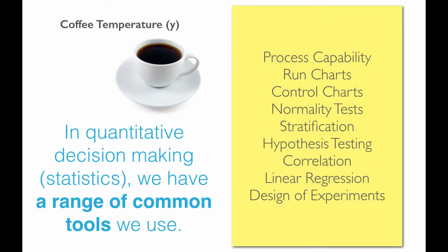In quantitative decision making methods, or statistics as we often refer to them, we have a range of common tools that we use, and they would include process capability, run charts, control charts, normality testing, stratification, hypothesis tests, correlation and regression, as well as design of experiments. These are the most common tools that we use, particularly in the world of Six Sigma and business improvement.